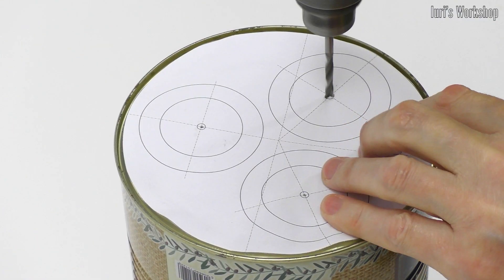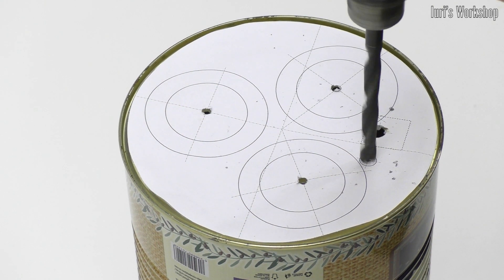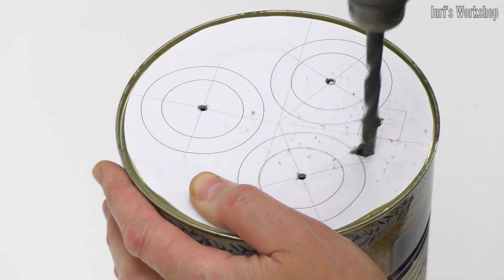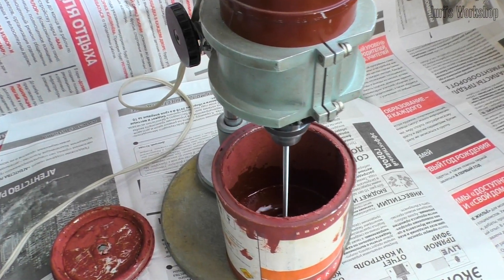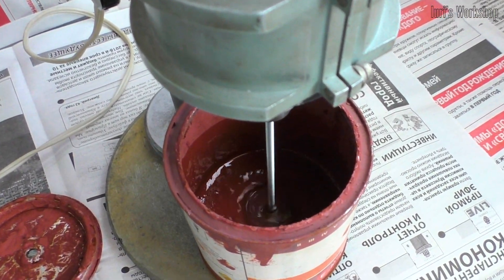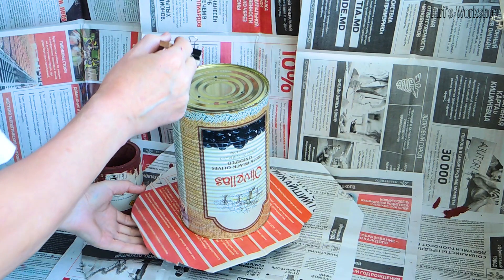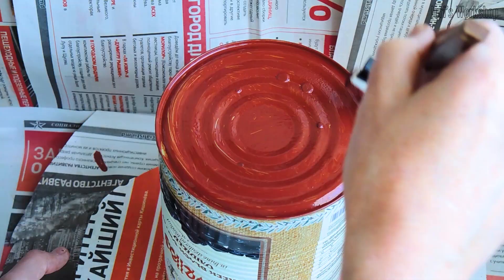And it's more convenient to check these holes according to the template, which is also in the video description. It is better to pre-coat the bottom of the can with a primer so that the paint holds better.